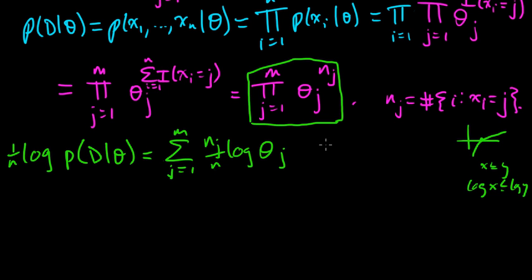Let's introduce a little simpler notation for these things. Let's call q sub j equal to n_j divided by n.